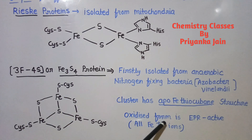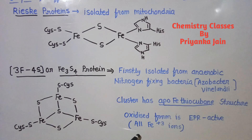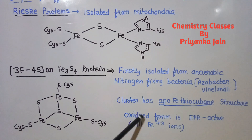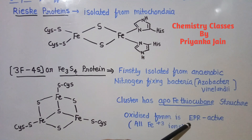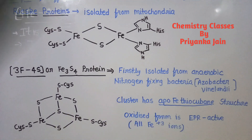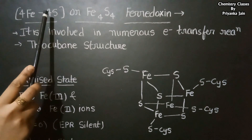In the oxidized form of 3Fe4S ferredoxin, it is EPR active — all the irons are in the +3 oxidation state. This is an important difference from the 2Fe2S protein: in 3Fe4S, the oxidized form is EPR active.